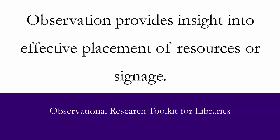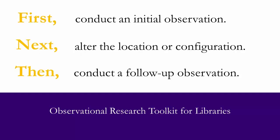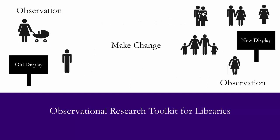Why observation? Observational studies conducted properly can provide great insight into practical library matters such as effective placement of resources or signage. For example, by conducting an observation and then altering the location, configuration, or placement of a resource or sign, and then conducting a follow-up observation, you can determine the exact effectiveness of alterations by comparing patron behavior before and after the change. If two subjects an hour read the sign before the change and ten subjects an hour read it afterwards, you know you're moving in the right direction.